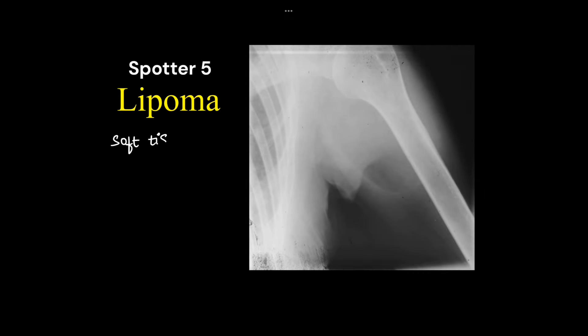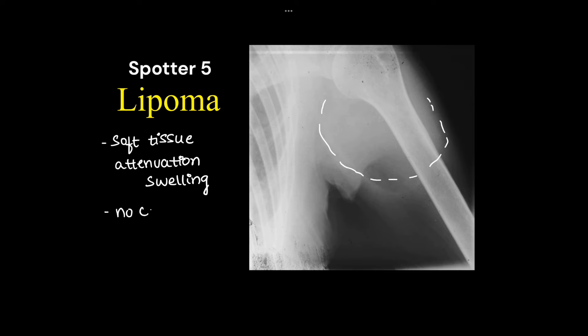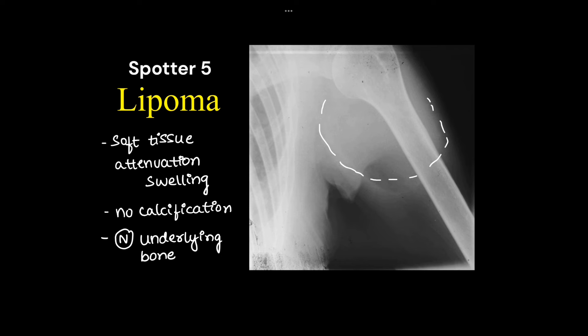Here we have an ill-defined soft tissue lesion with no internal features — there is no calcification, no fat density, and normal underlying bone. This was a case of lipoma of subcutaneous tissue.